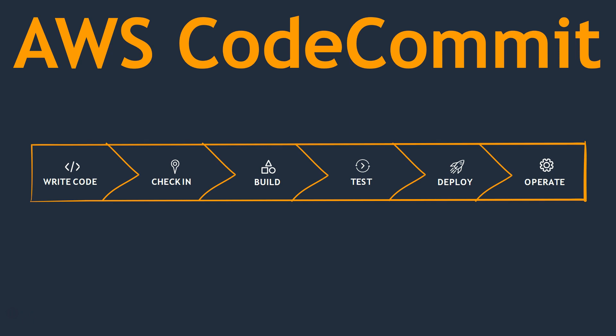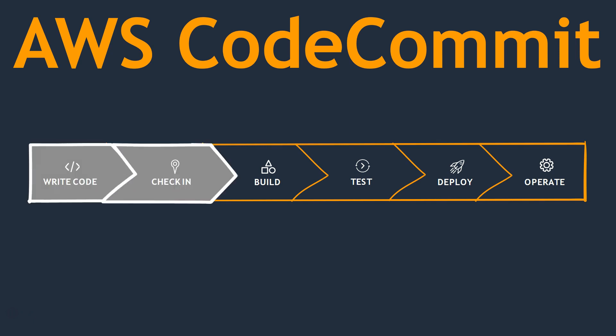What is exactly AWS CodeCommit? Let's say you are a developer writing some code and you need a place to check it in. Typically you might use GitLab, GitHub as a private repository, or Bitbucket. Similarly, Amazon has a service called CodeCommit which is very similar, and you can use familiar Git commands to commit your code.